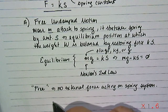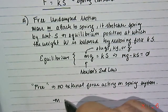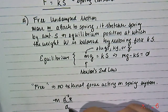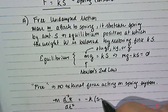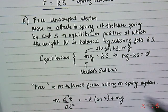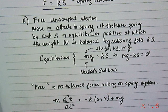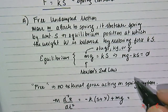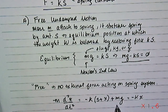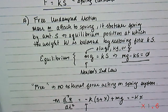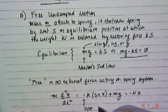Going back to Newton's law, we represent the force as mass times acceleration — the second derivative of displacement — which equals negative k times (s + x) plus the weight mg. You can simplify this equation to negative k times x, because we know mg minus ks equals zero. Those terms cancel, leaving minus kx. The negative sign is needed because the spring force must oppose the direction of motion.